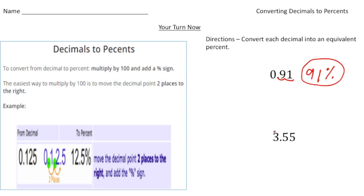The next one is 3.55. Again, I'm going to multiply this by 100 by moving the decimal two spots to the right, which gives us 355, and then add a percent, so you get 355 percent. So how'd you do?